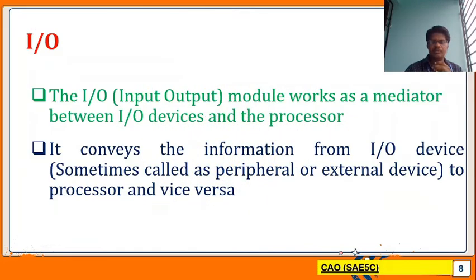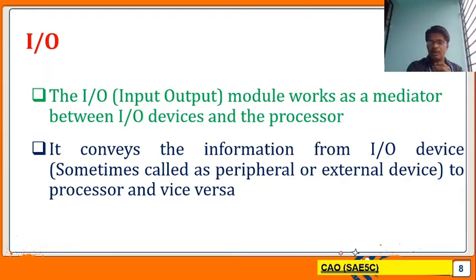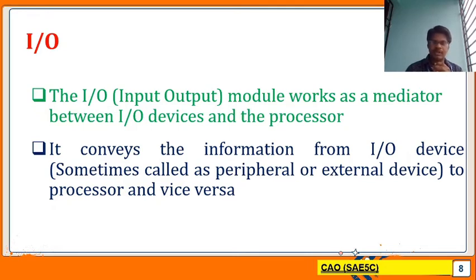Next, the input and output module. The I/O module works as a mediator between devices — the I/O devices. For example, if the memory module wants to transfer data to the processor, we need the input and output module. It provides an intermediate link between one or more devices. In order to communicate with a peripheral device or for a peripheral device to communicate with the processor, we need the I/O module.